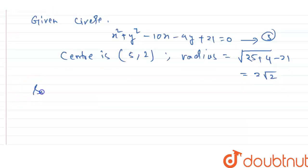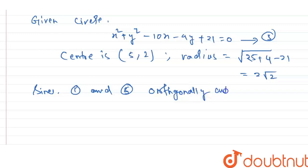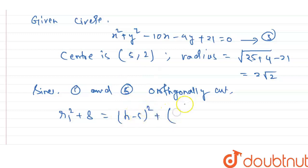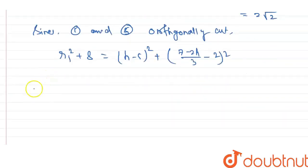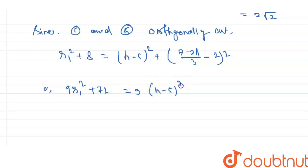Since circle 1 and circle 5 cut orthogonally, applying the orthogonality formula gives r1² + (2√2)² = (c1c2)², that is r1² + 8 equals the distance squared between centers (h, (7-2h)/3) and (5, 2). So: r1² + 8 = (h - 5)² + ((7 - 2h)/3 - 2)². After multiplying through by 9 we get 9r1² + 72 = 9(h - 5)² + (1 - 2h)².